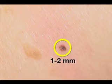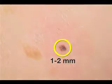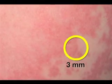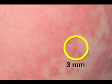A punch biopsy sample of a pigmented lesion should include one to two millimeters of surrounding normal skin when feasible. For inflammatory eruptions, a punch biopsy sample should measure at least three millimeters in diameter to minimize sampling error and to provide sufficient tissue for any special staining that may be required.